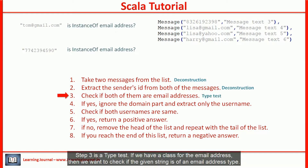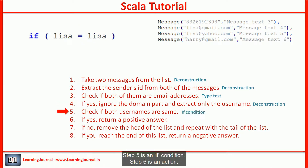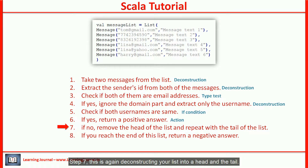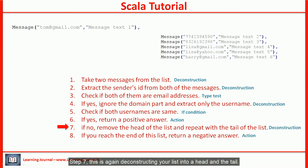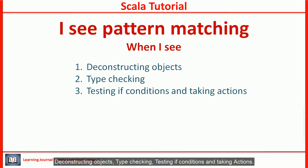Step 3 is a type test — if we have a class for the email address, we want to check if the given string is of an email address type. Step 4 is once again deconstructing an email address into a username and domain name. Step 5 is an if-condition; step 6 is an action; step 7 is again deconstructing your list into a head and a tail. You can sense a pattern matching solution when your logic is all about deconstructing objects, type checking, testing if-conditions, and taking actions.